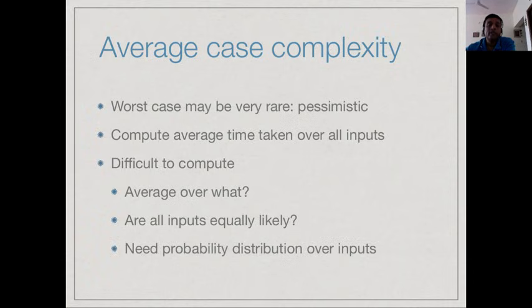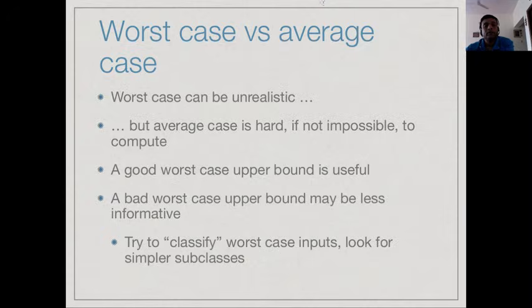Though it would make more sense from the point of view of behavior in practical situations to look at average case—how it behaves over a space of inputs—in practice it is very hard because we cannot really quantify the space of possible inputs and assign them meaningful probabilities. To summarize, we look at worst case even though it could be unrealistic, because average case is hard if not impossible to compute. There are very limited situations where average case analysis is possible, but these are very rare.